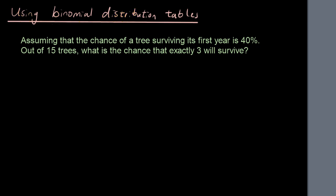Now this is obviously a binomial distribution because each event has two possible outcomes. Either you survive or you don't. So the probability of success, P, is 0.4. So 40% is equivalent to 0.4 and the number of trials is 15, and we want to find out what is the chance of getting exactly 3 trees. x is equal to 3, 3 out of 15 trees.